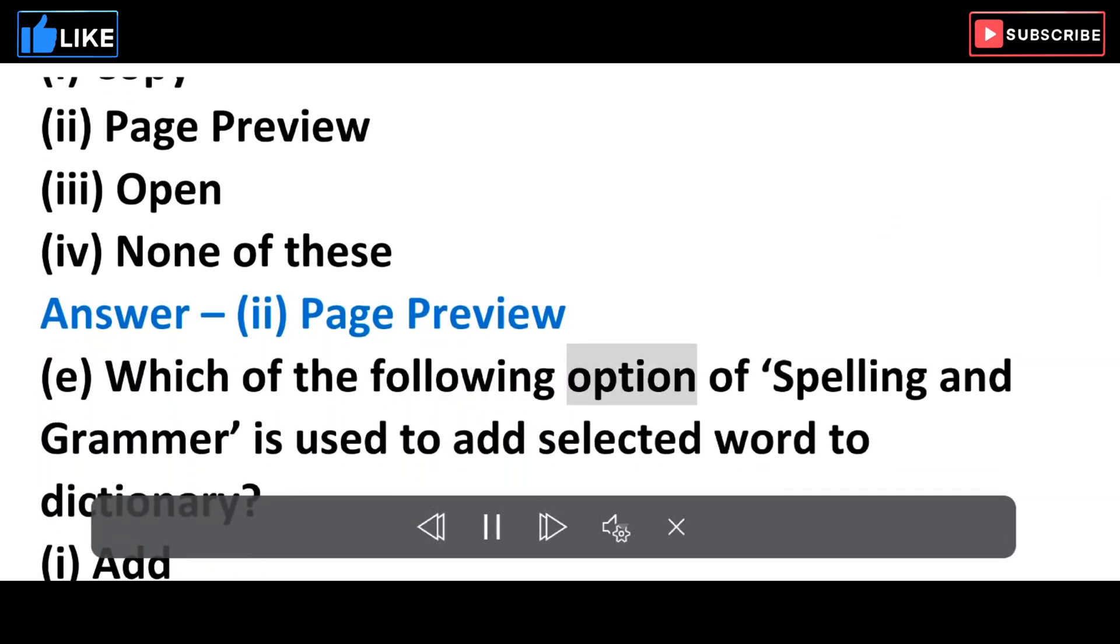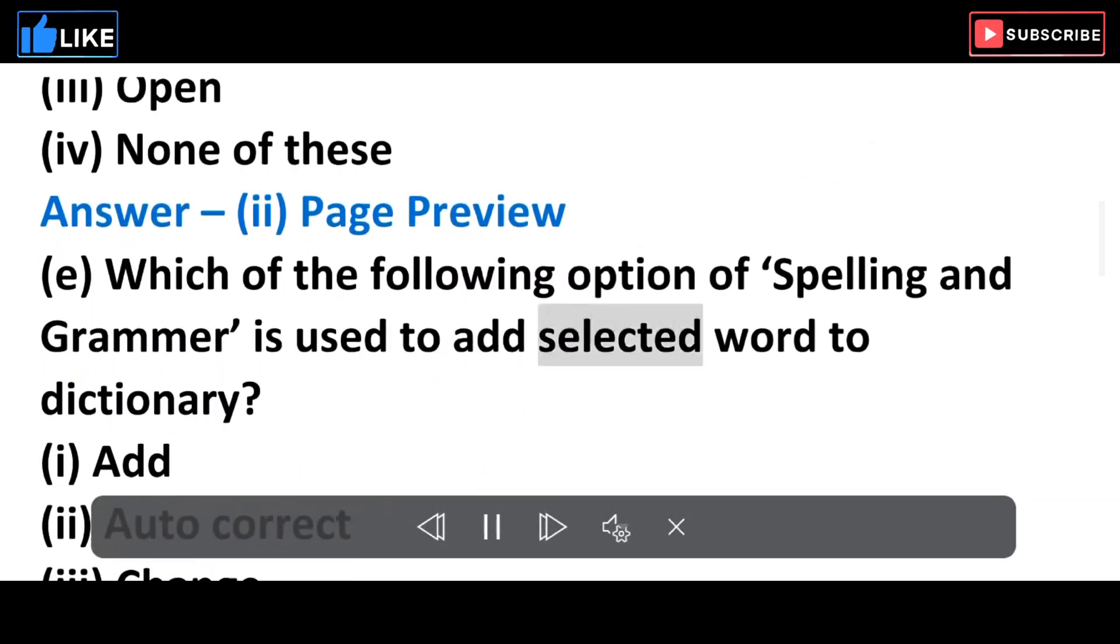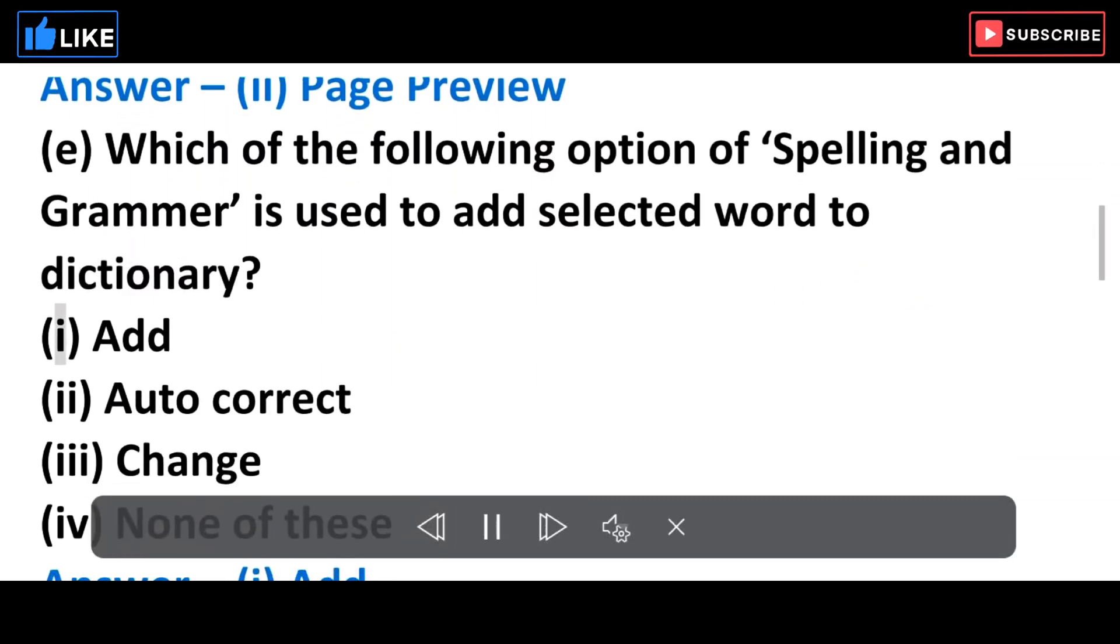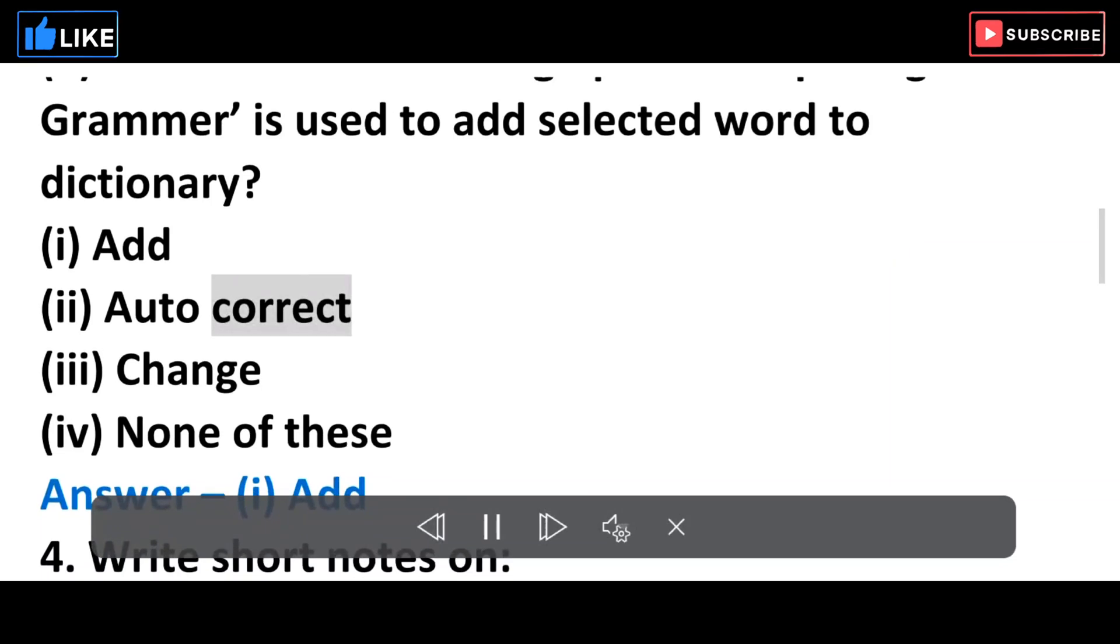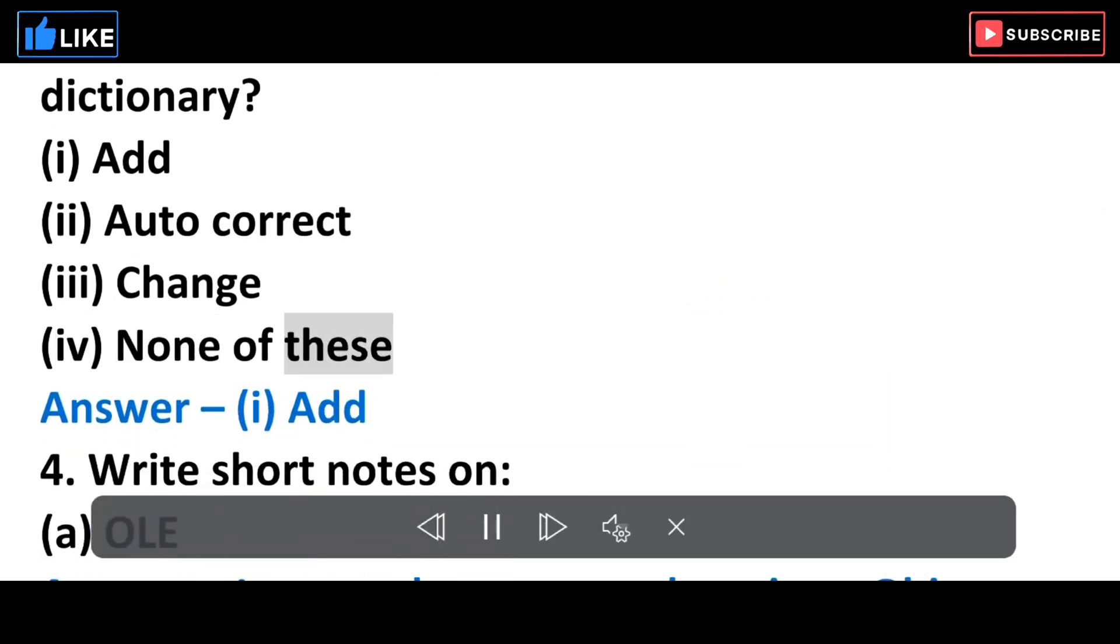E. Which of the following option of spelling and grammar is used to add selected word to dictionary? (i) Add (ii) Autocorrect (iii) Change (iv) None of these. Answer: (i) Add.